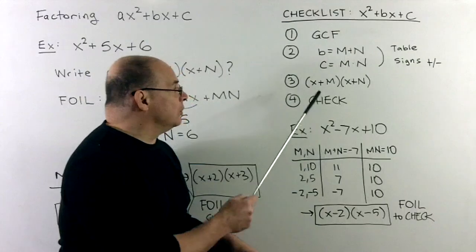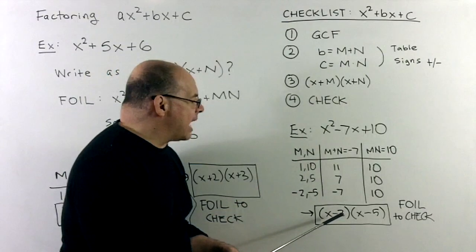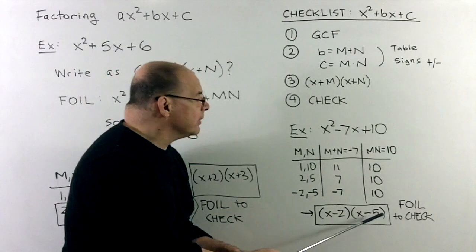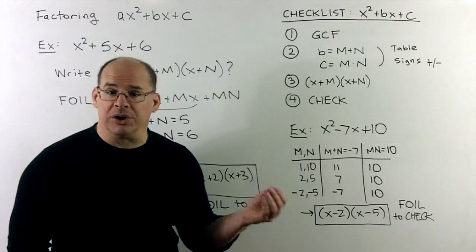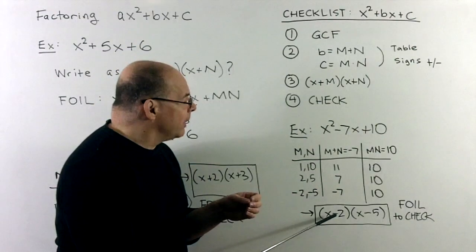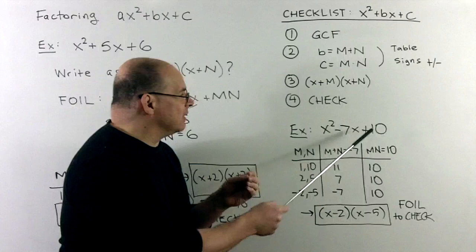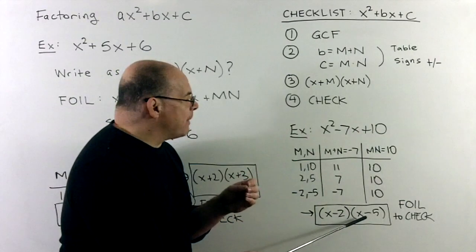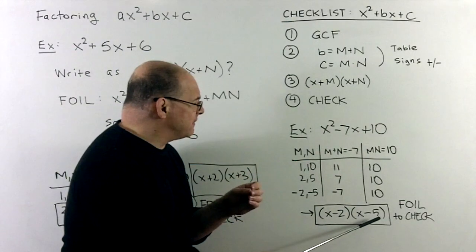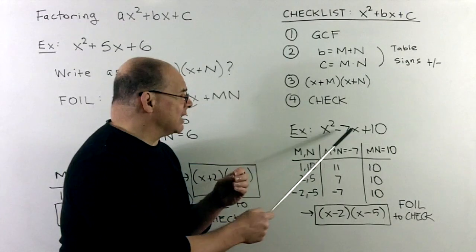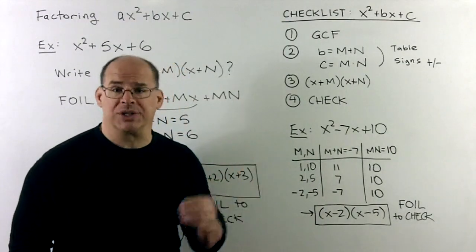We drop into x plus, x plus, giving us x minus 2 times x minus 5. To finish, we FOIL to check: minus 2 times minus 5 gives us 10; the inside of minus 2x and outside of minus 5x add to minus 7x. That works out.